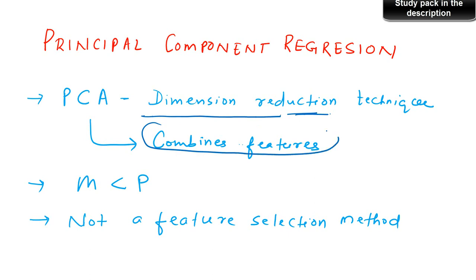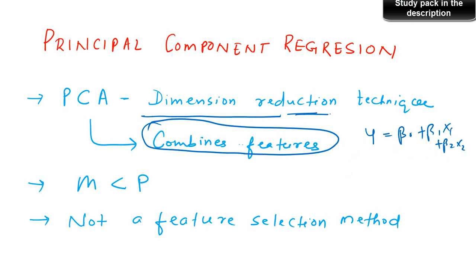It combines features in such a way that the variation in your target variable is explained properly. In a linear regression, say y = β0 + β1*x1 + β2*x2, with two independent variables x1 and x2, principal component analysis will combine x1 and x2 in such a way to come up with a single variable, so that the variation in y explained by x1 and x2 will also be explained to the same or similar extent by the combined variable.